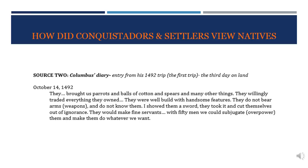To understand how conquistadors viewed indigenous inhabitants, we look at Columbus's diary. On the third day of his 1492 trip, he wrote of the Arawak: 'They brought us parrots and balls of cotton and spears and many other things. They willingly traded everything they owned. They were well built with handsome features. They did not bear arms and do not know them — I showed them a sword and they took it and cut themselves out of ignorance. They would make fine servants. With fifty men we could subjugate them and make them do whatever we want.' Columbus moves very quickly from describing the people's kindness and gentleness to discussing how easily he could use them as servants.